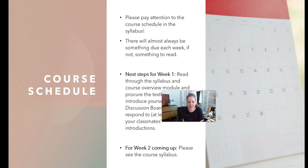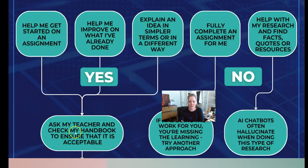For next steps: read through the syllabus carefully, read through Module 1 on Canvas, and then introduce yourself on discussion board number one for the beginning of the class, plus two replies to peers. Please do not use ChatGPT for your discussion board posts — I will be able to see if it's written by AI because AI uses a very stilted sort of way of writing.